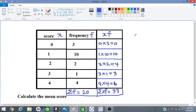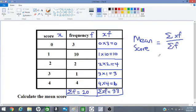In order to calculate the mean score now, we divide the sum of xf by the sum of f. So we get 33 divided by 20.